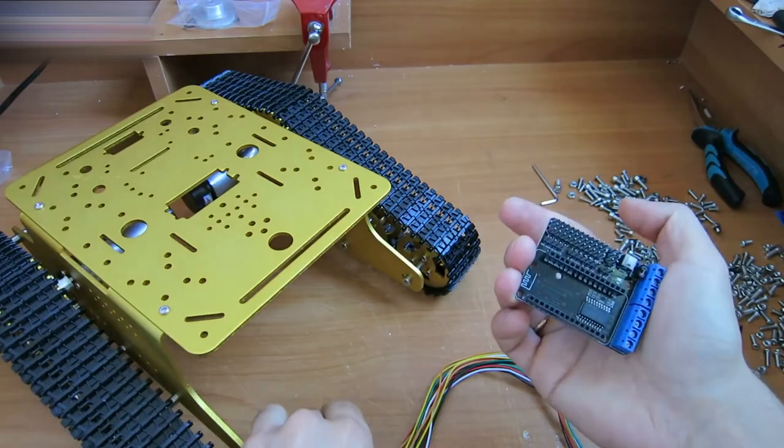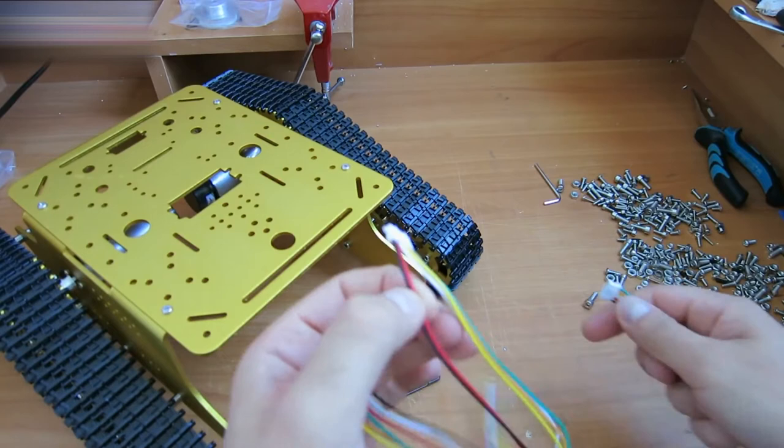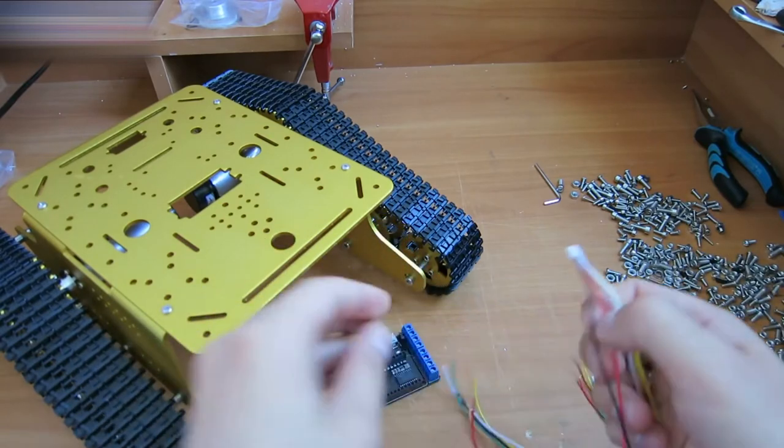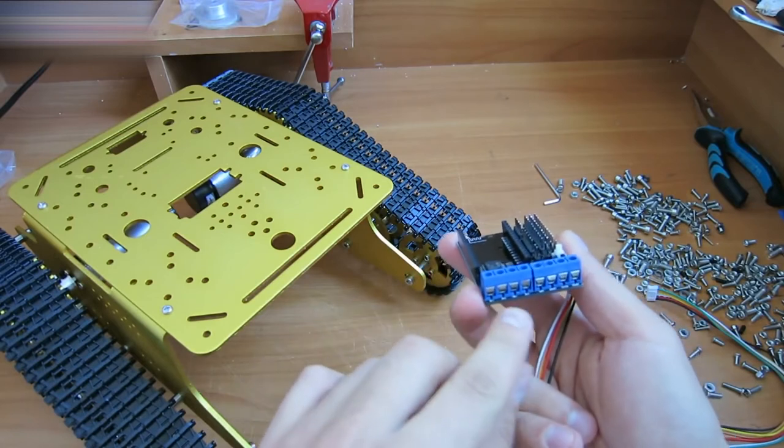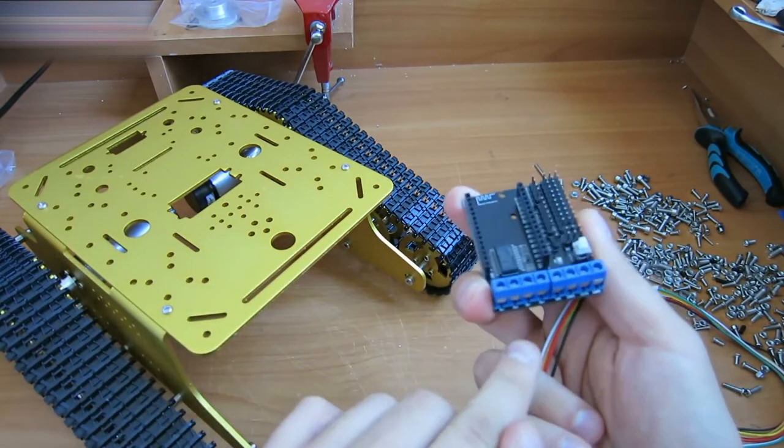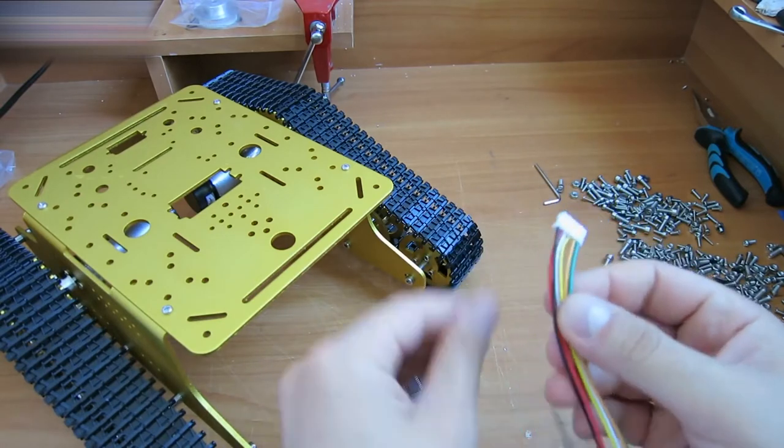Six wires go into the motor here and are the red and black. There are only four inputs for the two motors. Here is where we will put A minus, A plus, B minus, B plus.